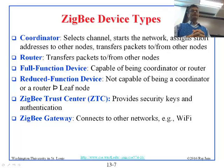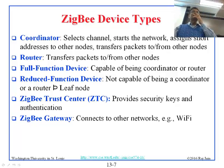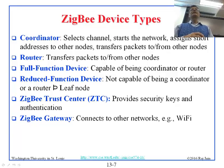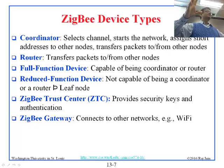An FFD can be a router, and a router must be an FFD, but an FFD doesn't have to be a router — it could also be a leaf. An RFD cannot be anything other than a leaf node. So FFD can be a leaf, a router, or a coordinator, while RFD is always a leaf. The gateway is the node that connects to other networks, for example Wi-Fi, Bluetooth, or wired networks. The trust center is a security function totally independent of the wireless functions — it is like a safe where you keep all the keys.